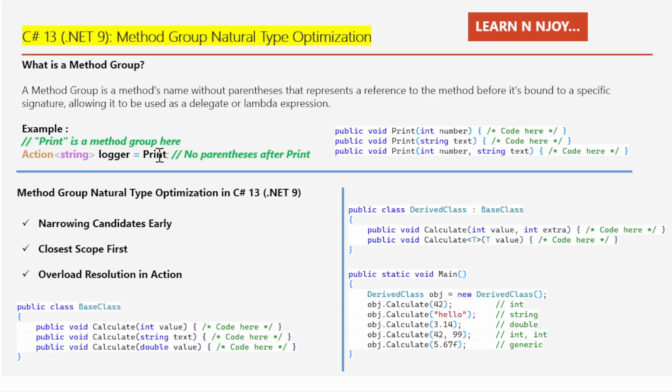In C# when we have multiple methods with the same name but different parameters, we call it method overloading. And all these overloaded versions with the same name are what we call a method group. Think of it as a collection of methods that all share a name but do different things based on the parameters we pass in.